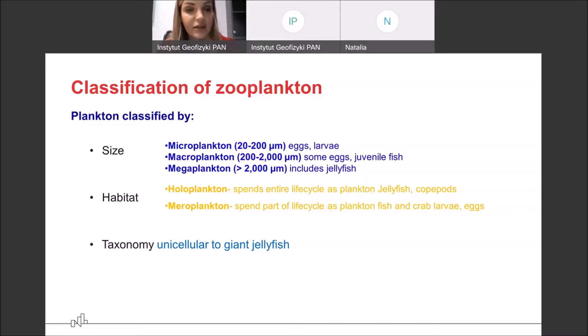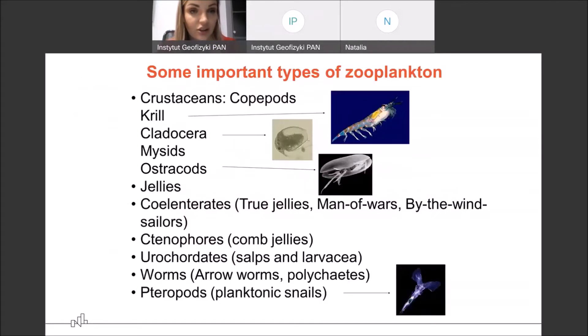I already mentioned the habitat. So some organisms spend their entire life cycle as plankton, which is holoplankton, and some only a part of their life cycle, which is meroplankton. Of course, many different types and species of animals belong to this category, the zooplankton from unicellular organisms up to giant, gigantic jellyfish.